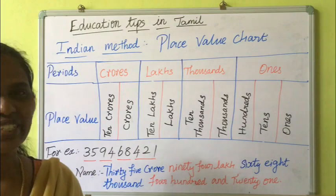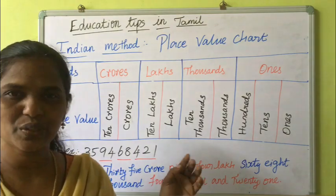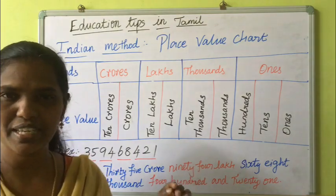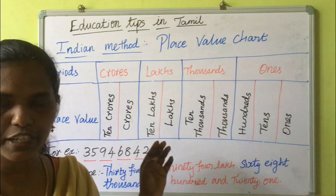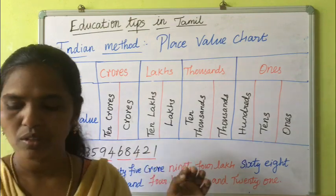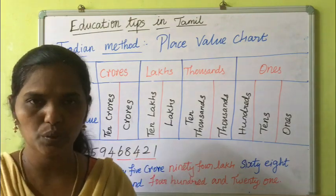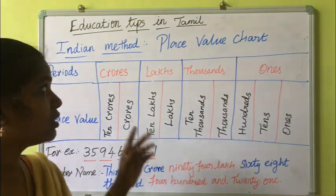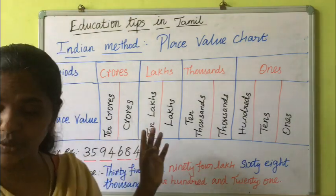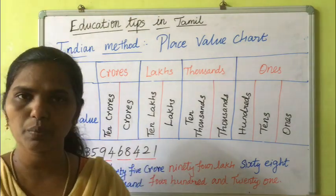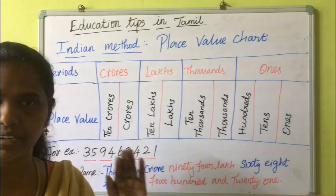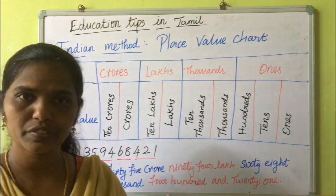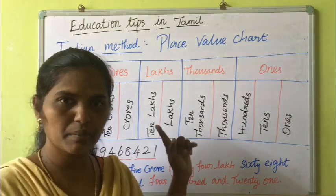Hello students, today we are going to see place value jar 600, first year term, page number 4. Two methods are given: Indian method and international method. First let us see the Indian method.